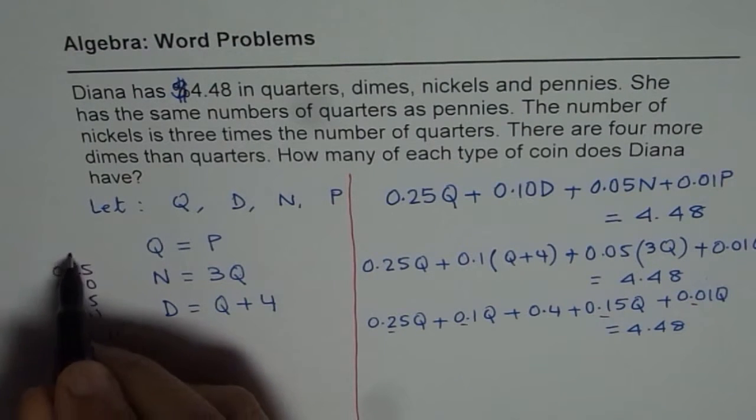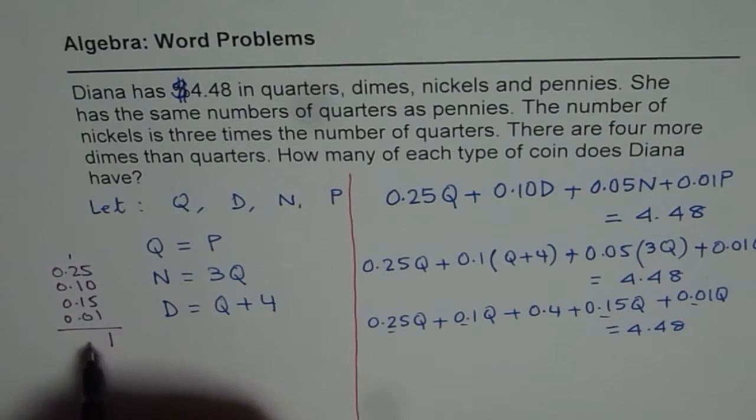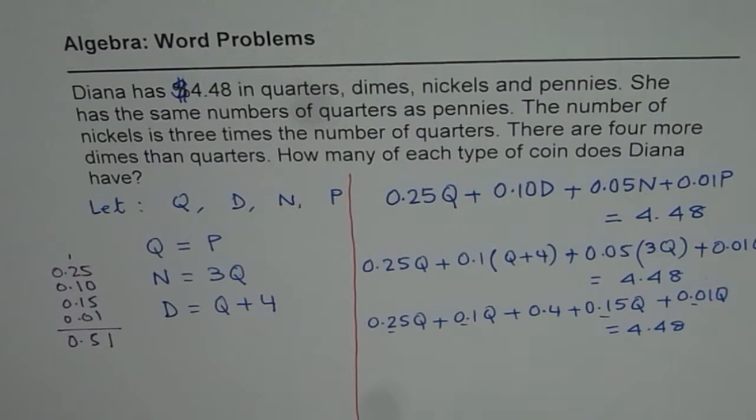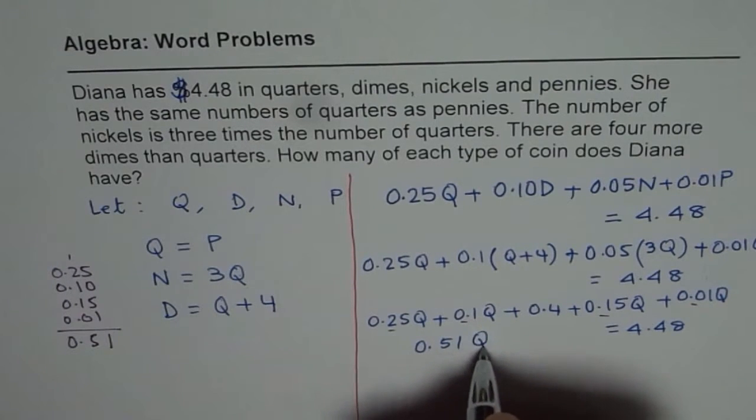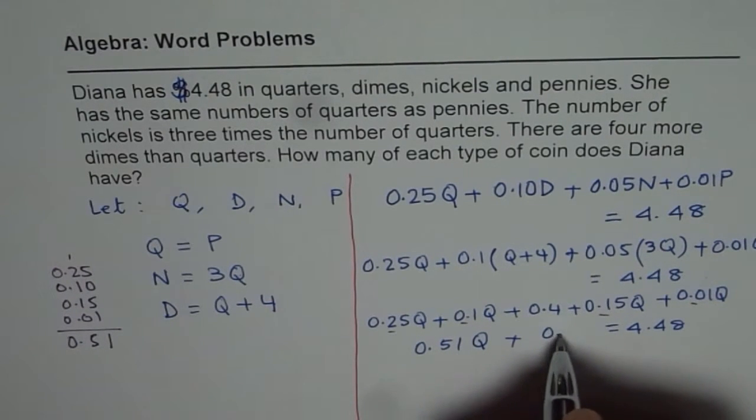We get 0.51. So we get 0.51 quarter plus a number here 0.4.